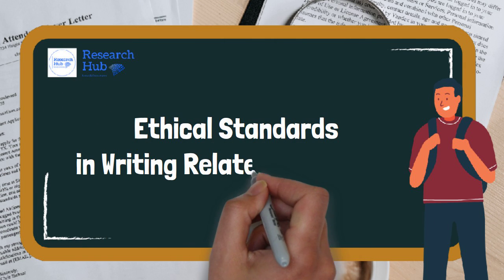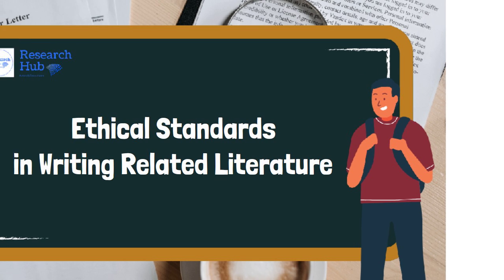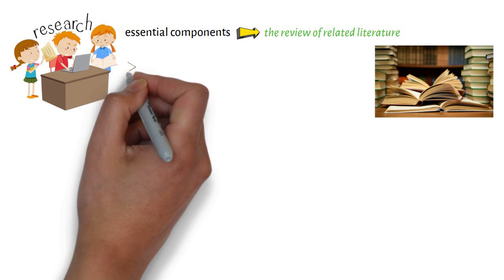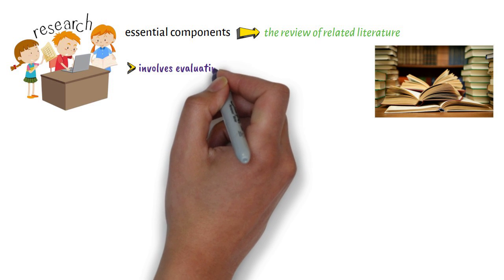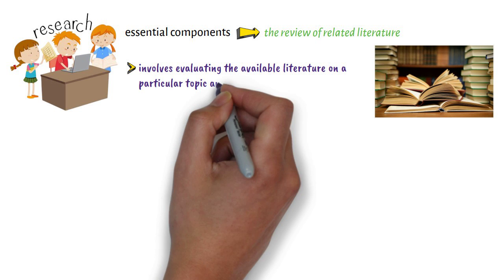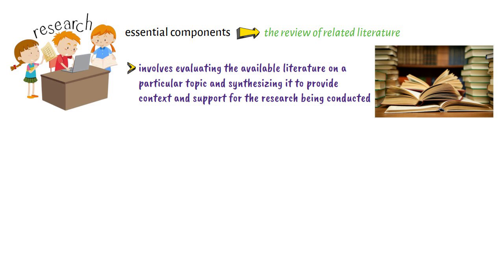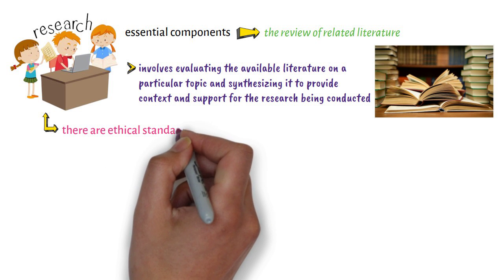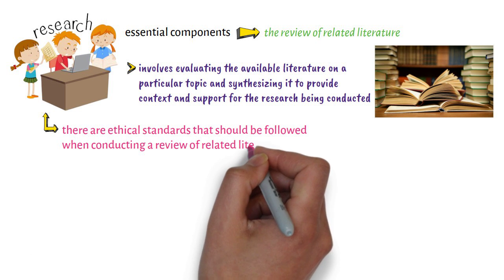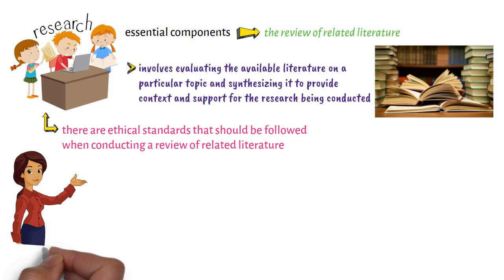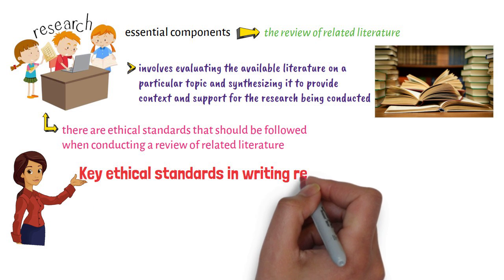Ethical Standards in Writing Related Literature. When conducting research, one of the essential components is the review of related literature. This process involves evaluating the available literature on a particular topic and synthesizing it to provide context and support for the research being conducted. As with any aspect of research, there are ethical standards that should be followed when conducting a review of related literature. In this video lecture, I will discuss very briefly some of the key ethical standards in writing related literature.